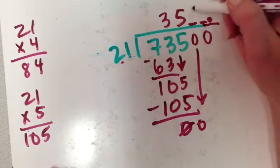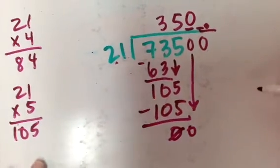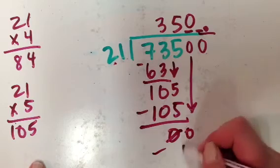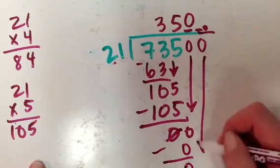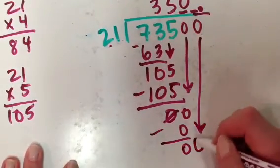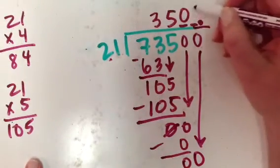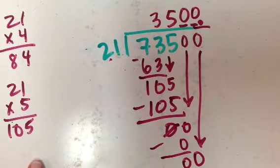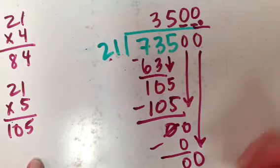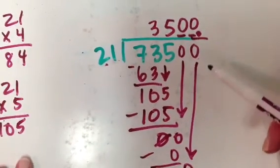21 can't go into 0. Well, it goes in 0 times we'll say, which is 0. And now I'm going to drop down this other 0, and 21 can go into 0 0 times, okay? So there's my answer, 3,500.